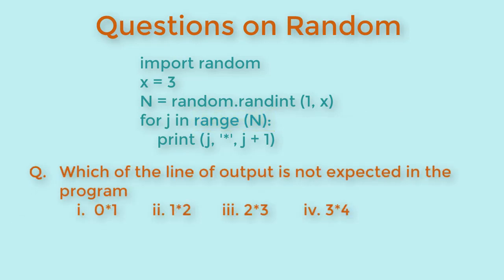Next question is which of the line of output is not expected in the program. Here we know range function executes from 0 to n-1. So j can have values from 0 to 2. So it can never print 3*4.